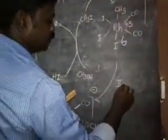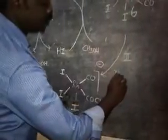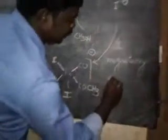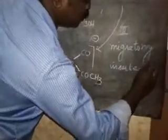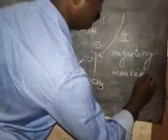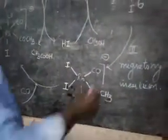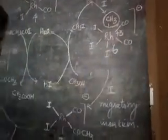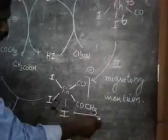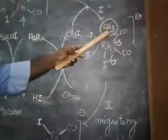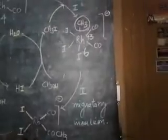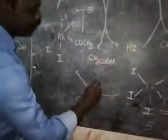The second step, as usual, is the migratory insertion reaction. Migratory insertion means one group migrates and is inserted between two other groups. In this reaction, the methyl group migrates and is inserted between rhodium and one of the carbonyl groups to form an acyl group. After this step we have a five-coordinated species.